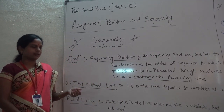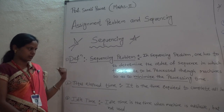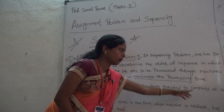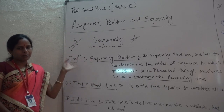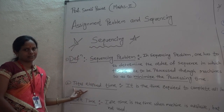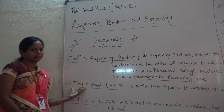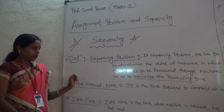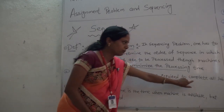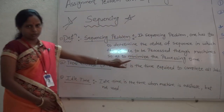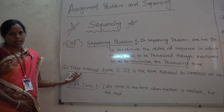The next point in sequencing is total elapsed time. What is total elapsed time? It is the time required to complete all jobs — not one by one, but all jobs together. The total time required to complete all jobs is called total elapsed time.